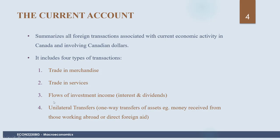The third item in the current account is flows of investment income. This is not the stocks or bonds themselves, but the income from those financial instruments. For example, if a Canadian owns a U.S. Treasury bill, the interest income received is income coming into Canada, and that would be classified as a receipt under the current account.